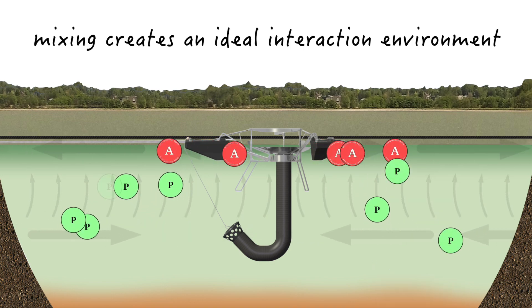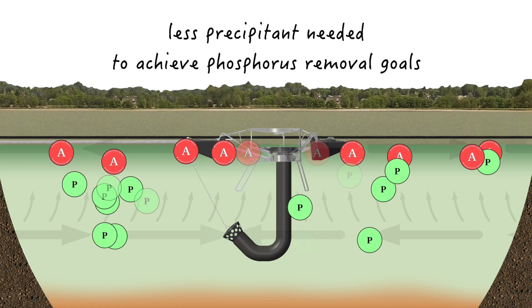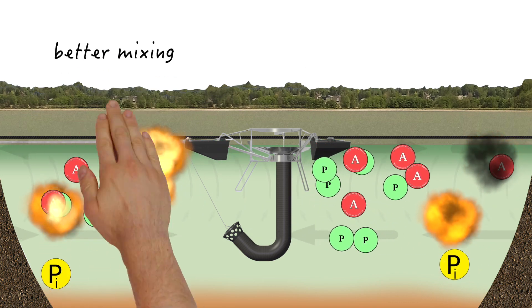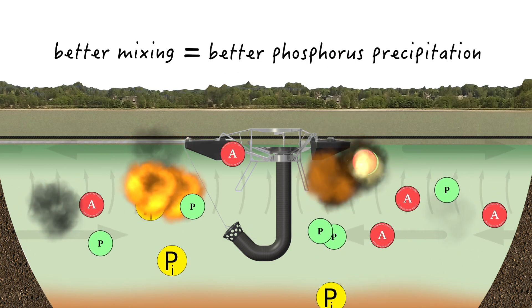In many cases, when compared to traditional application methods, only half as much precipitant is needed to achieve better phosphorus removal. Or simply put, the better the mixing, the better the phosphorus precipitation.